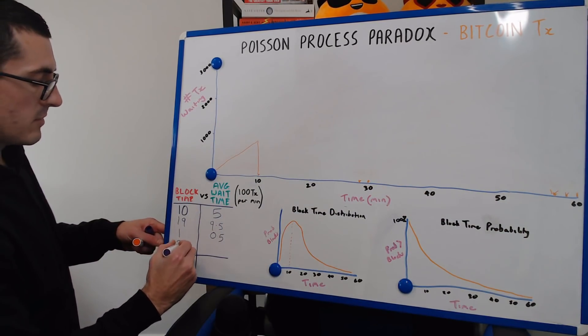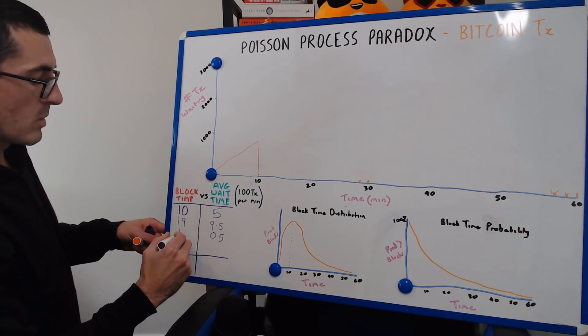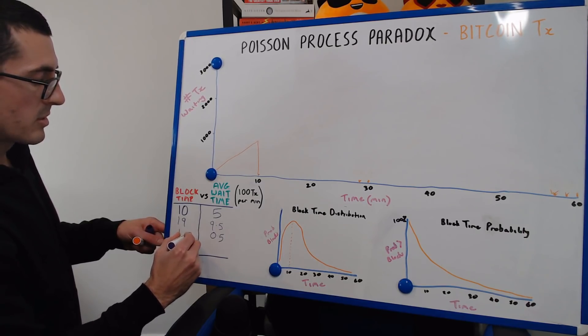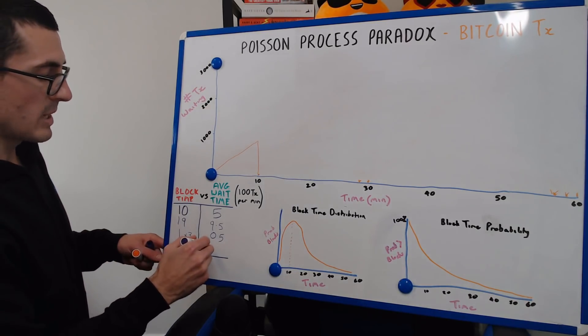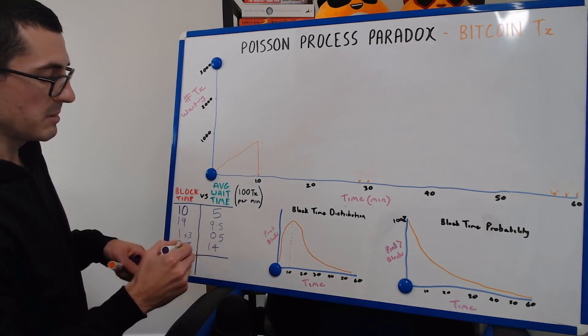And then to finish off, we're going to have two more one-minute blocks to bring that average back to 10 minutes with six blocks in the hour. So the average wait time for those 28-minute block participants was 14 minutes.